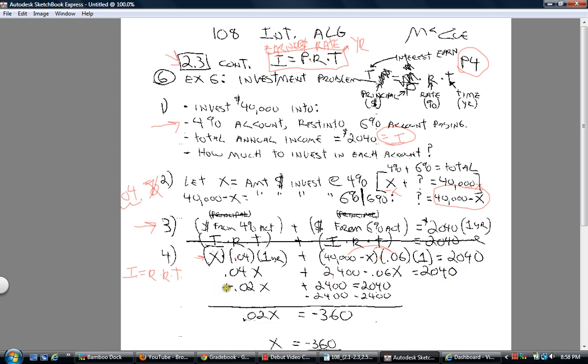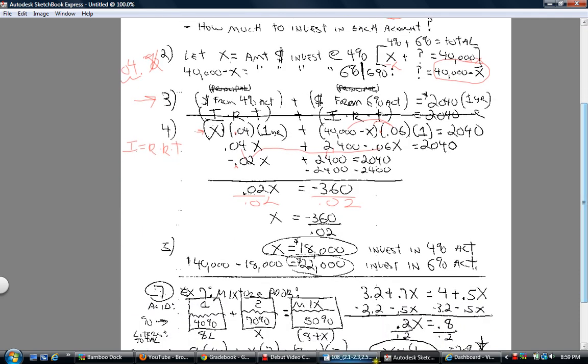So I got that, and I have 0.04x minus 0.06x combines into negative 0.02. Then we drop the 2,400 down, equals 2,040. Remember, that's 0.02x. Subtract 24 from both sides. Remember, you want to isolate the x term. You're left with 0.02x equals 360. Divide by 0.02 on both sides.